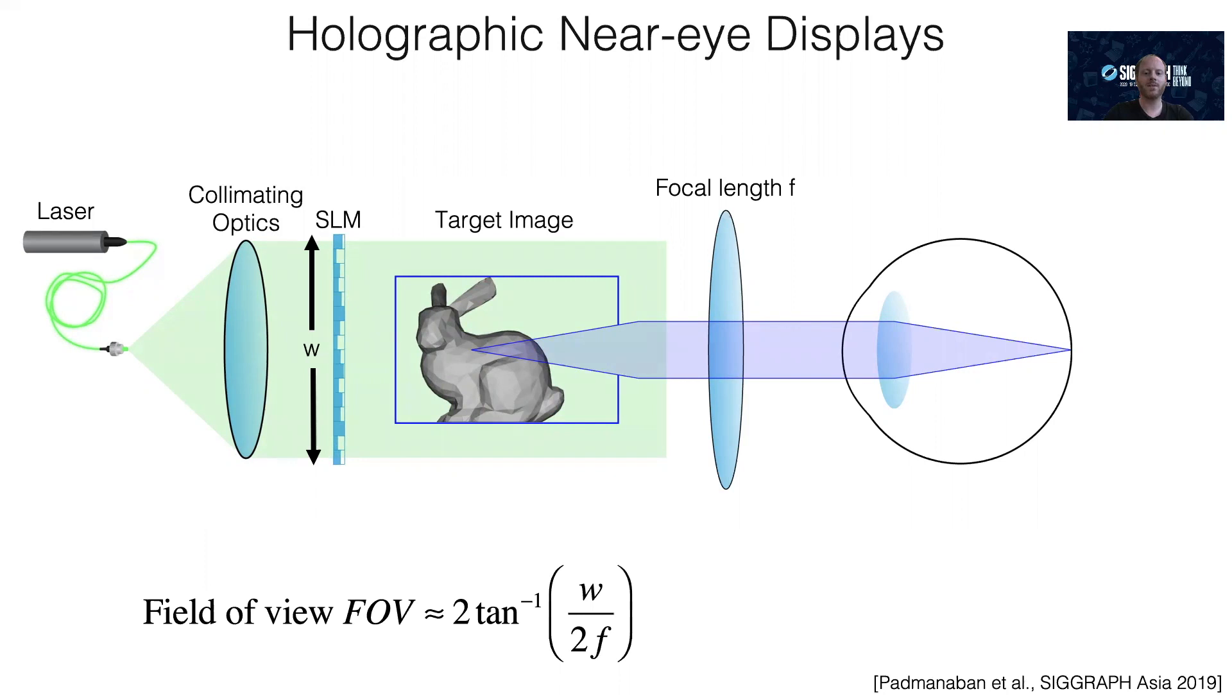How to compute the SLM pattern is one of the core challenges of computer-generated holography, and we'll get back to that in a second. In our recent SIGGRAPH Asia paper, we showed that the achievable field of view of such displays depends on the SLM size and the focal length of the lens. We also showed that the eyebox size depends on the pixel pitch, the eye relief, and the wavelength. The executive summary is that reasonable fields of view can be achieved by currently available SLMs, but the eyebox is typically very small.